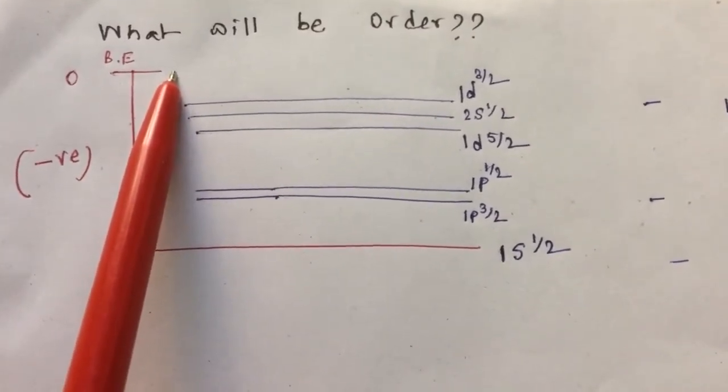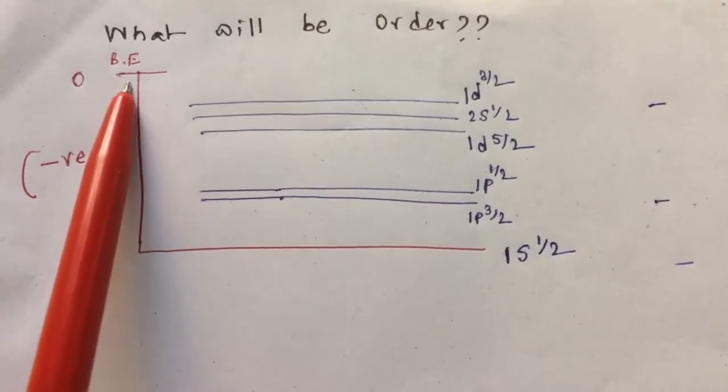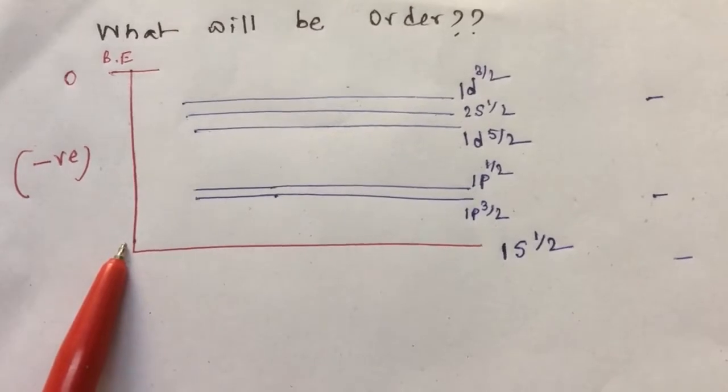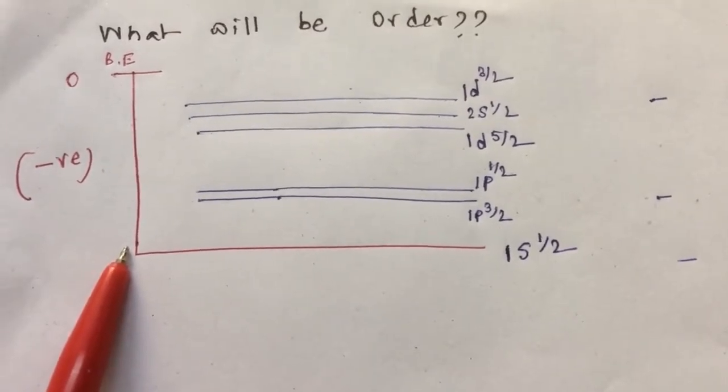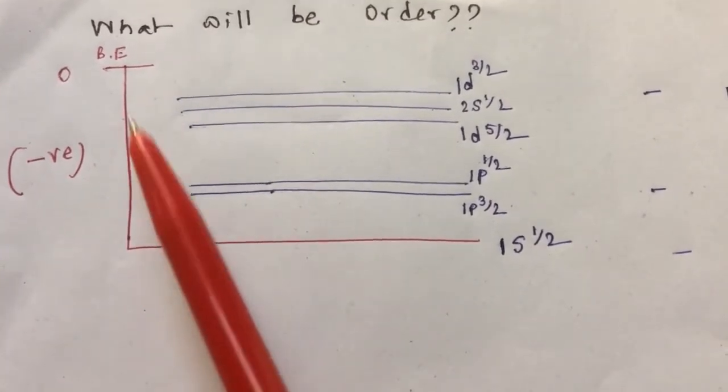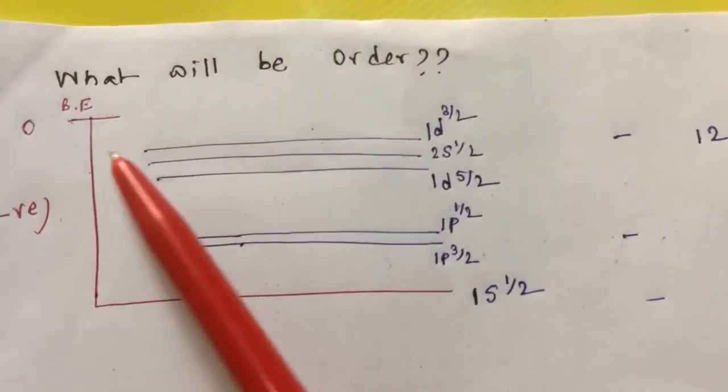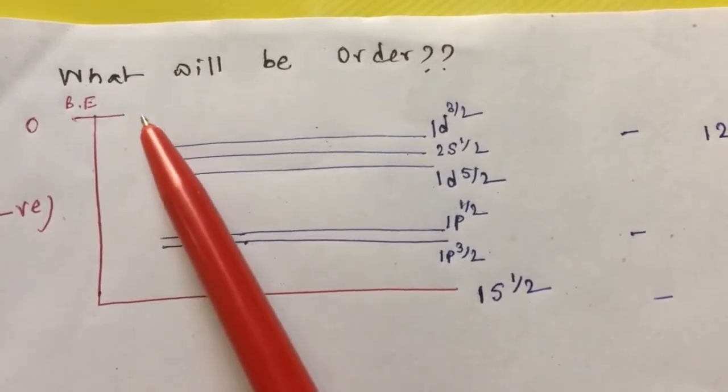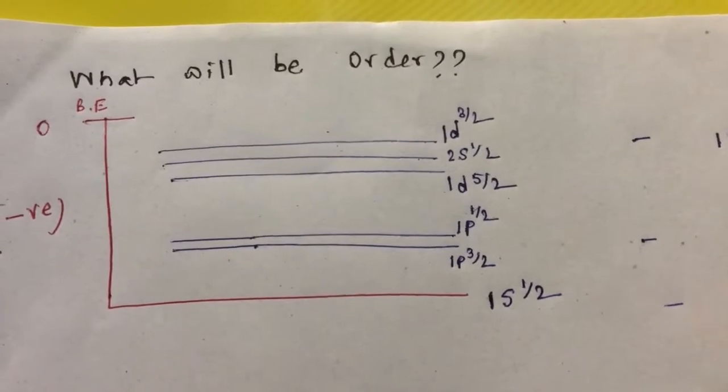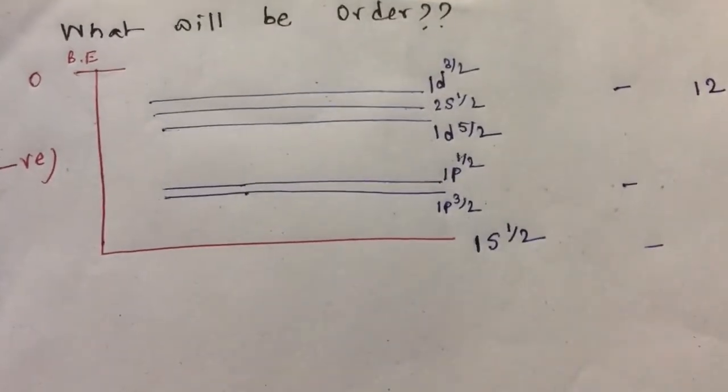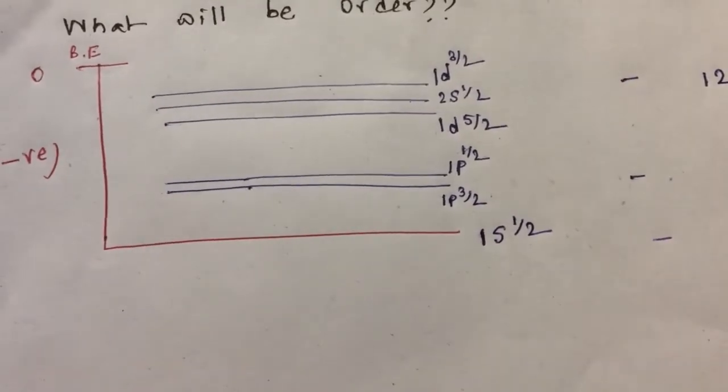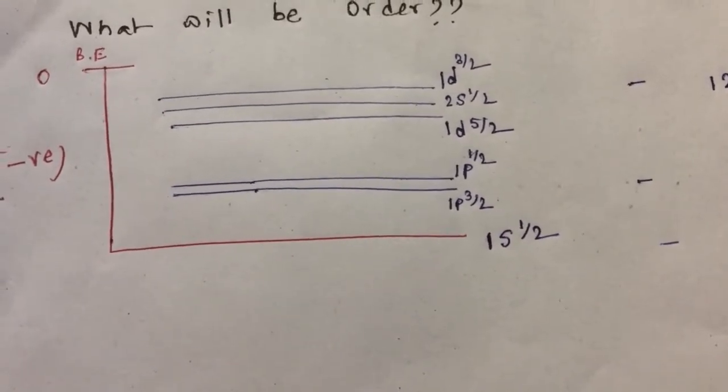As it is a binding energy, the system is bound. Energy has to be negative, because otherwise, if the energy is positive, then the system or the neutron or the proton will be free particles.